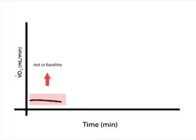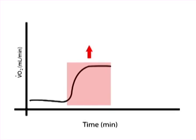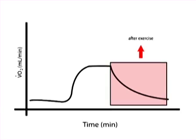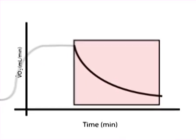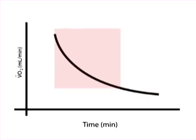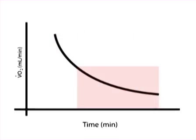This is a typical curve of oxygen consumption: at rest or baseline, during exercise, and after exercise. Taking a close look at the post-exercise curve, it is possible to see two different components: the fast component and the slow component.